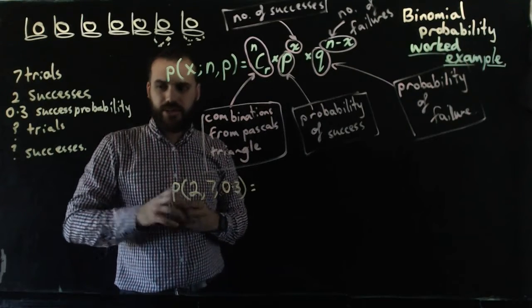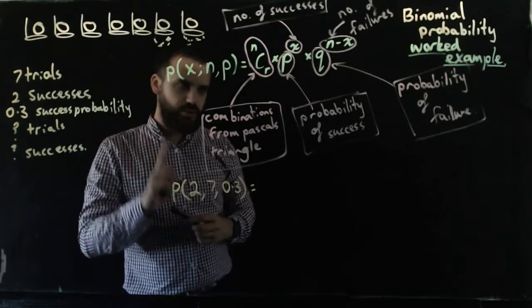Then we need to do nCr. We need to figure out the combinations and we can do that from Pascal's triangle.